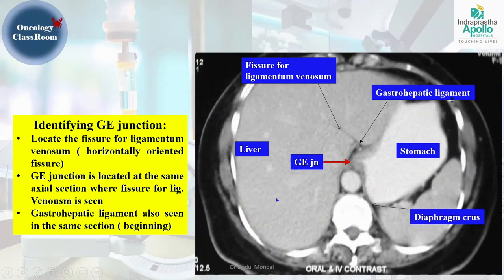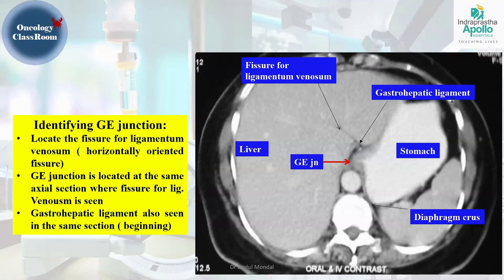Going down to the level of the gastroesophageal junction, we can appreciate the GE junction and the liver. Identifying the fissure for ligamentum venosum—between the left lobe and quadrate lobe of the liver—is useful because at this level we will find the GE junction. However, if the GE junction can be directly identified by its appearance, that is also acceptable. We can also see the gastrohepatic ligament and the diaphragmatic crura at this level.